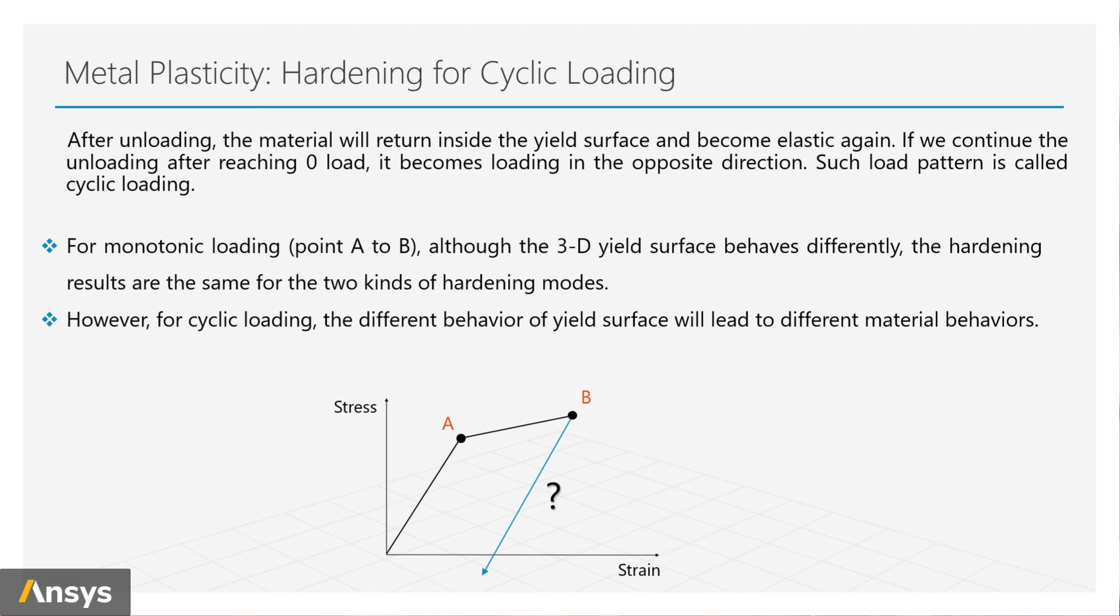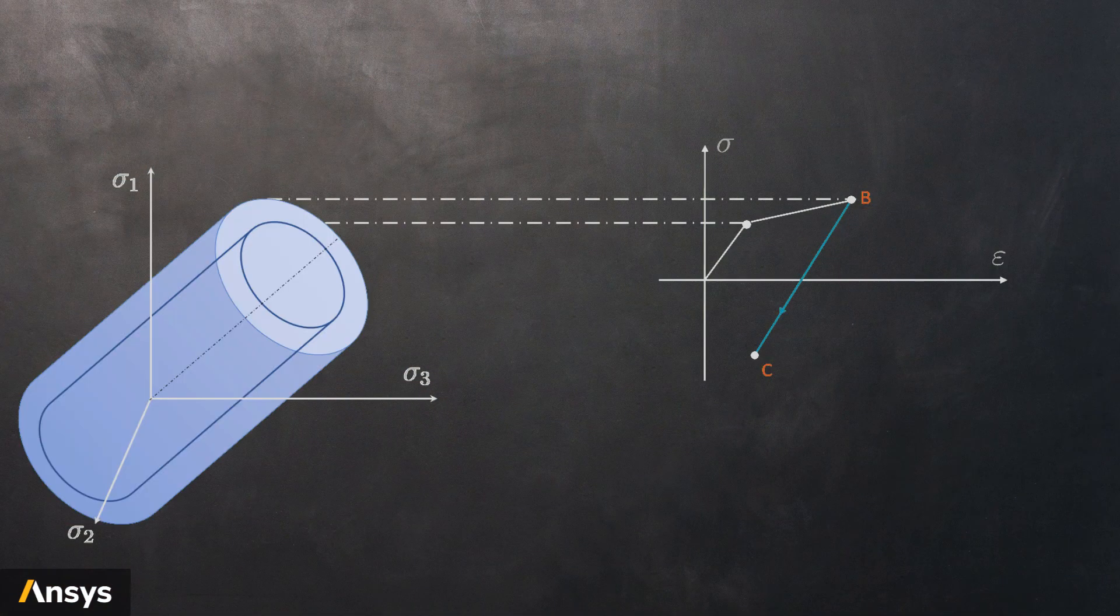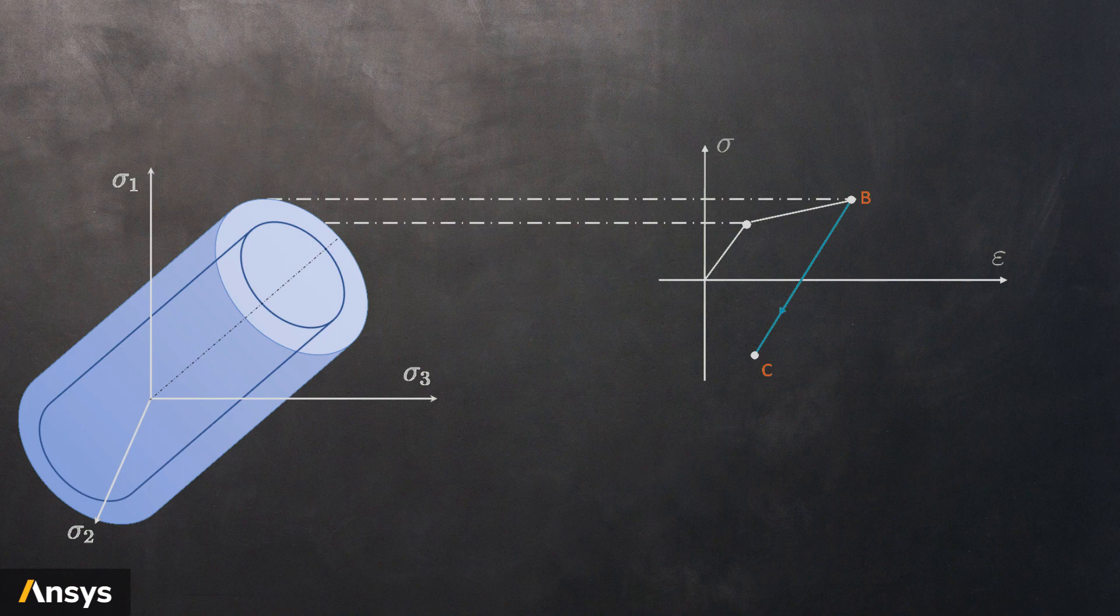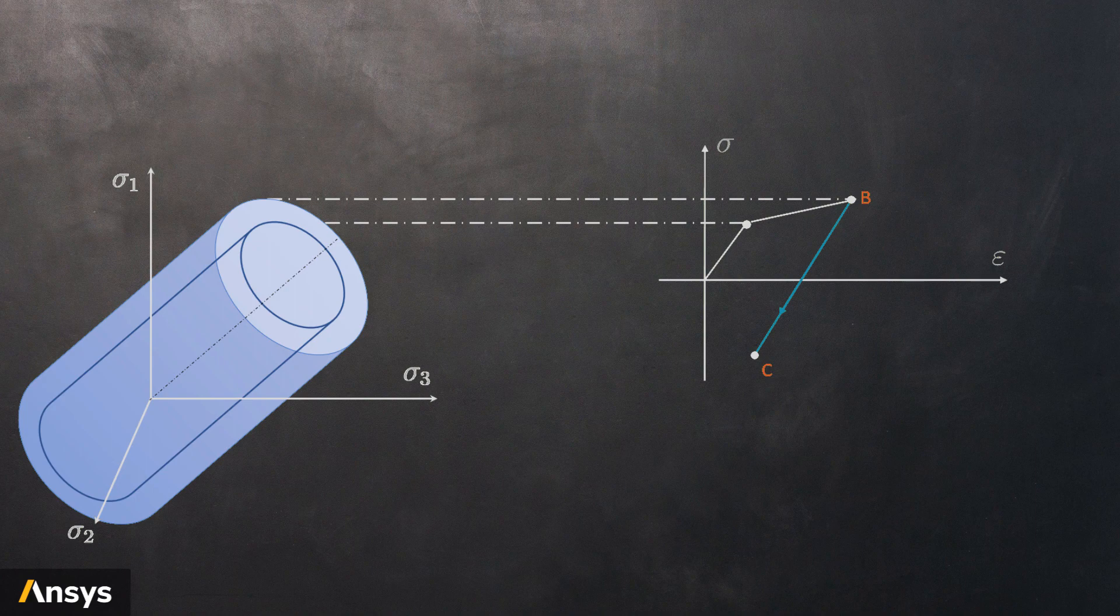However, for cyclic loading, the different hardening rules of yield surface will lead to different material behaviors. For isotropic hardening in cyclic loading, the yield points are symmetric above the zero stress axis. Inside one cycle, here from point B to C, the material returns to elasticity. The material states remain inside the expanded yield surface. At the moment of reaching point C, which is under loading in the opposite direction, the material state reaches the other side of the cylindrical surface.